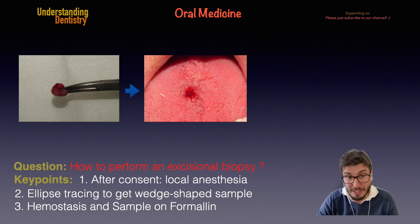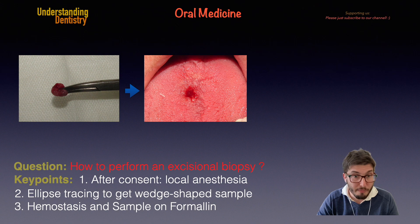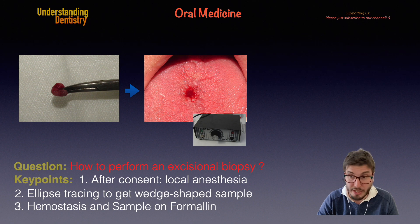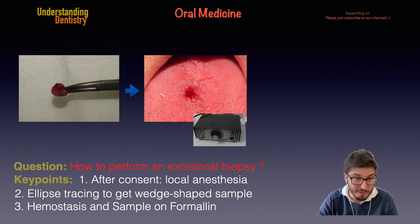Of course there are blood vessels at the site, so now we need to control the bleeding. We can do this with sutures, or — if it's a small lesion like this — we can use an electrical scalpel to cauterize the area, which is exactly what we did here.